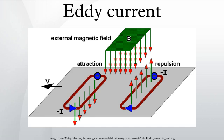They can be induced within nearby stationary conductors by a time-varying magnetic field created by an AC electromagnet or transformer, for example, or by relative motion between a magnet and a nearby conductor.